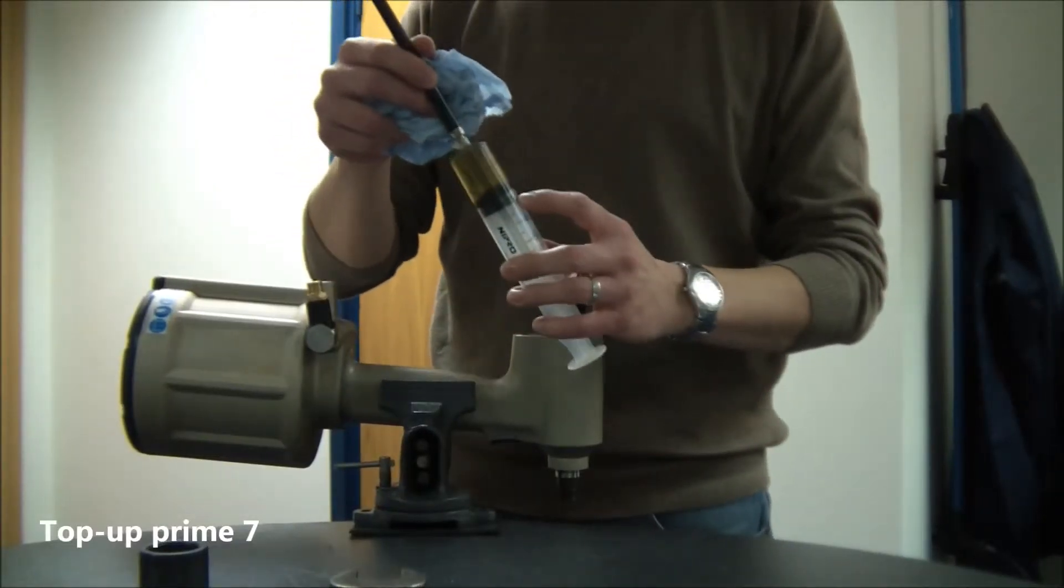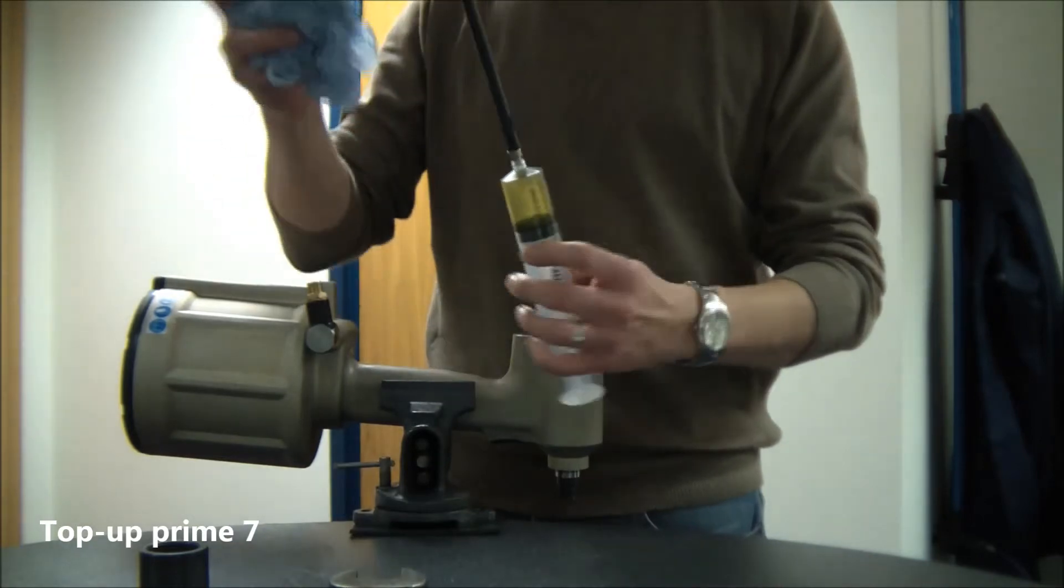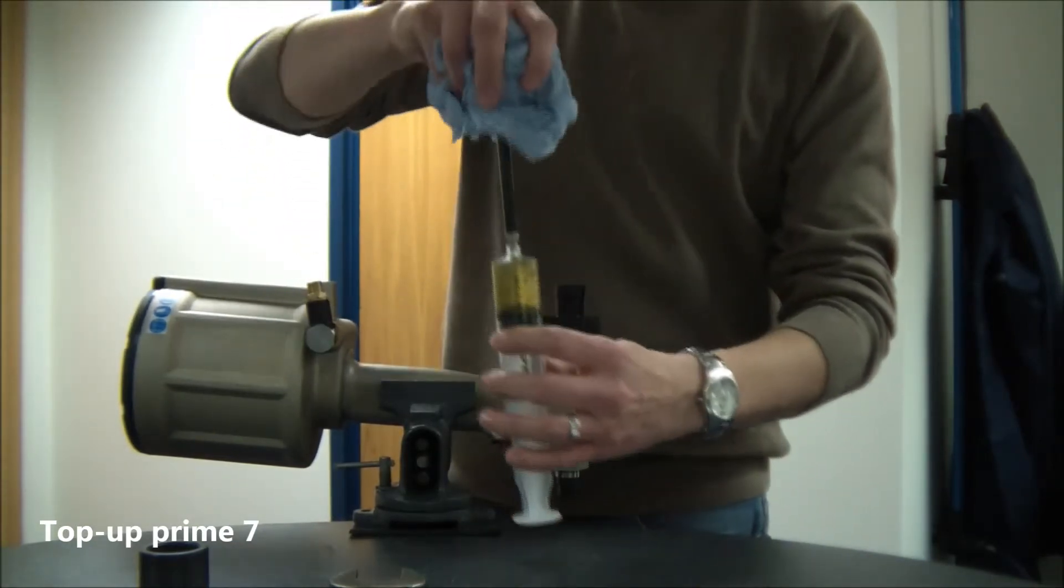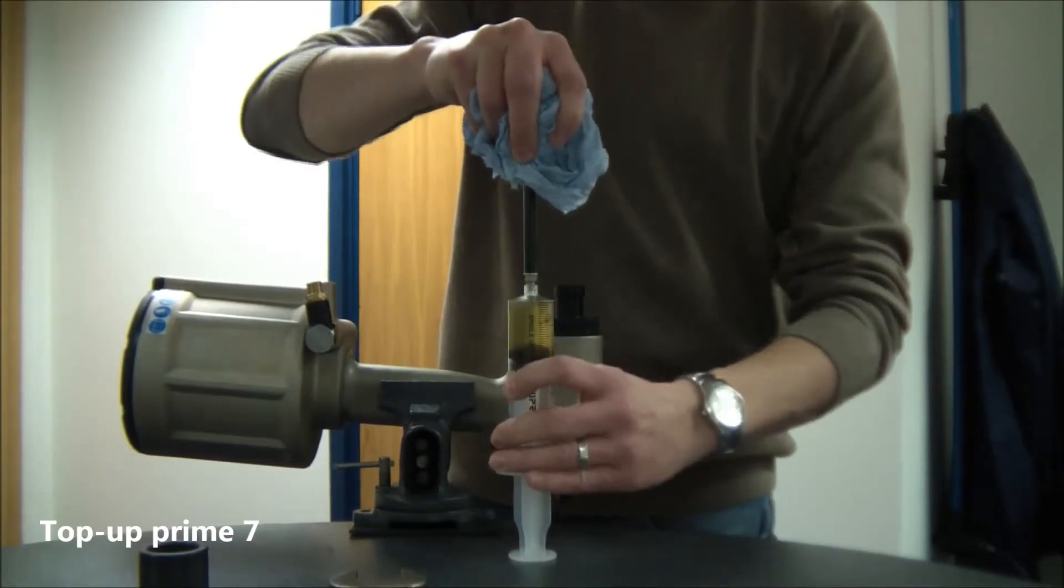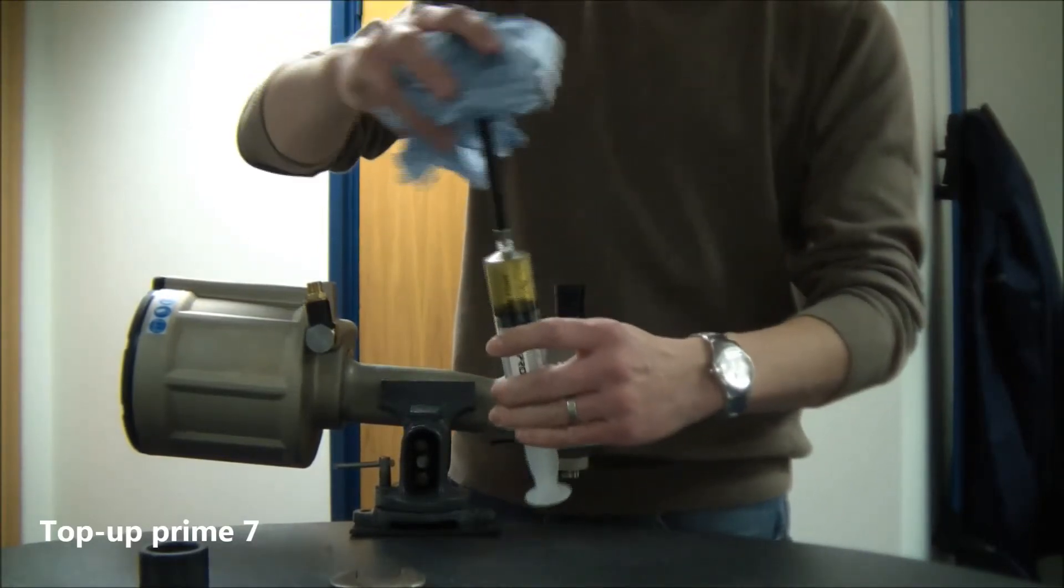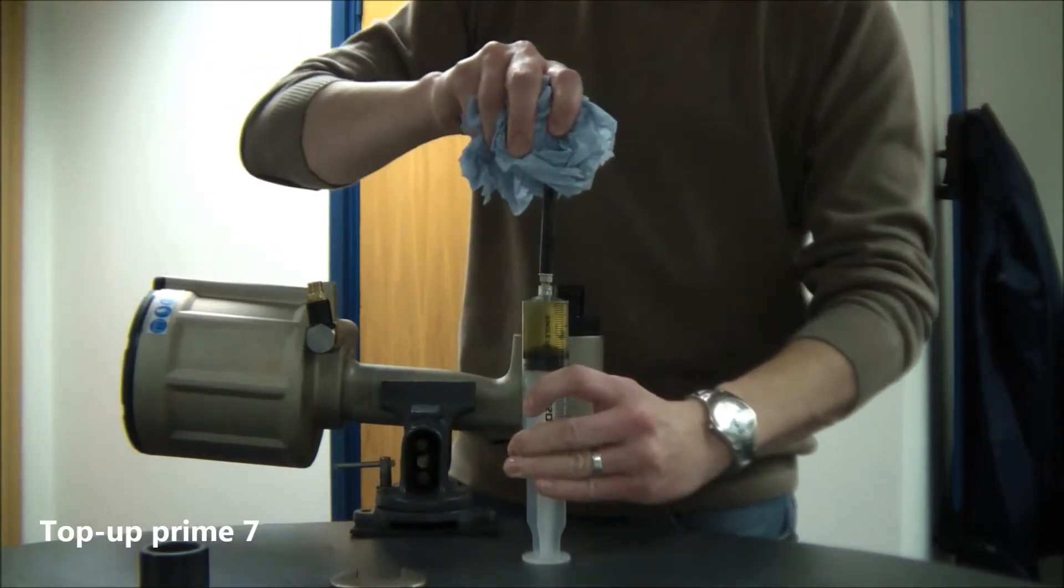With approximately 30 milliliters of oil in the syringe, make sure that any air bubbles that are evident are pushed out of the extension so that there's only oil in the syringe. Make sure you do this with both syringes.